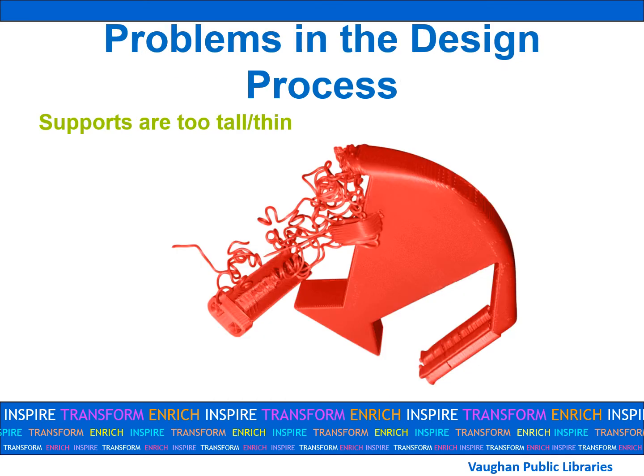When supports are too tall and thin, which is common for many delicate and fine objects, they may tip over during the printing process before they are able to support an overhanging angle. This will cause everything on your object to droop. To correct this, you will need to alter your design to allow for thicker supports or remove any isolated towers.